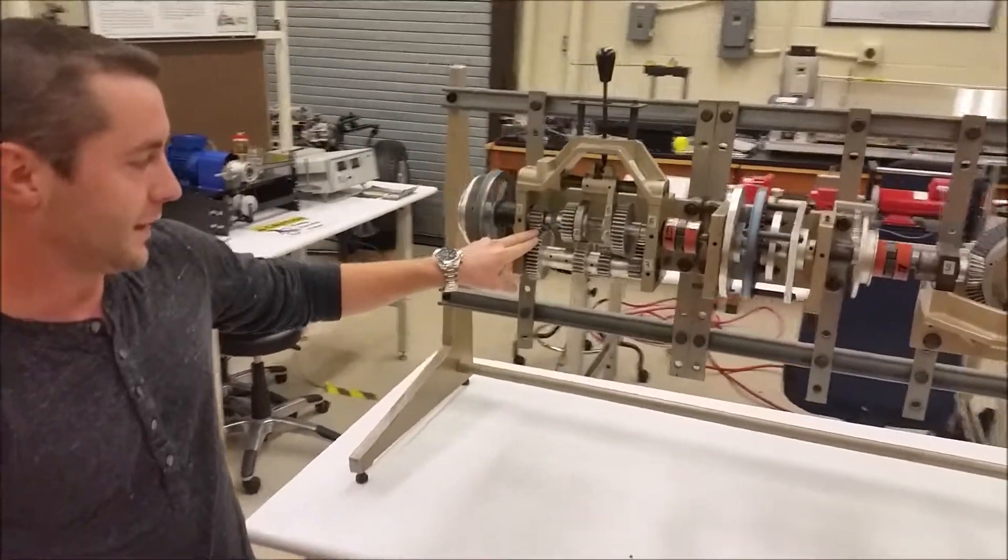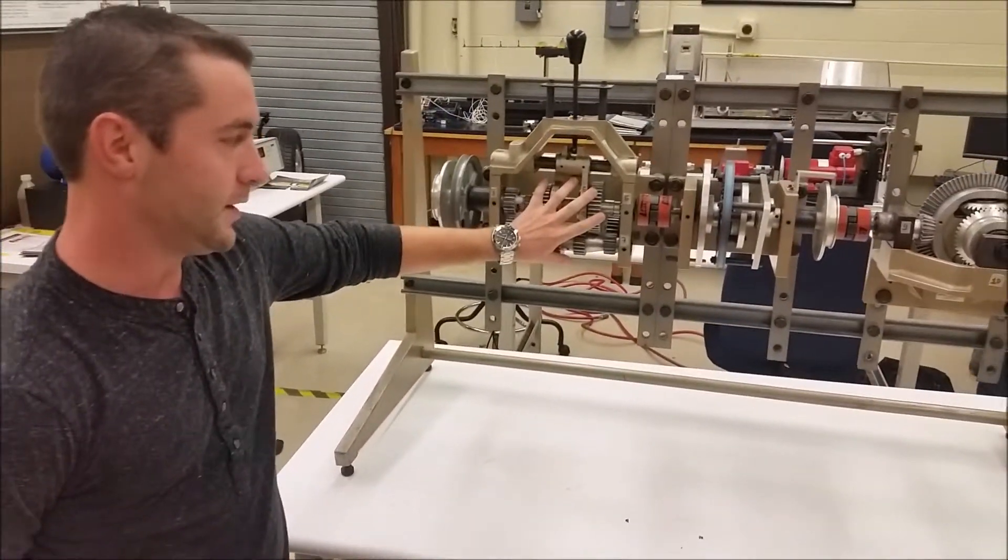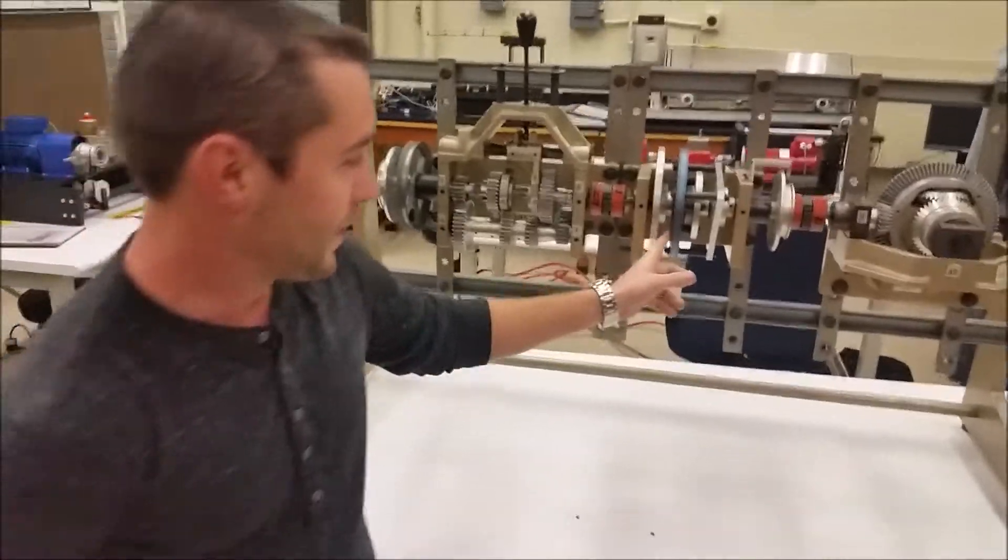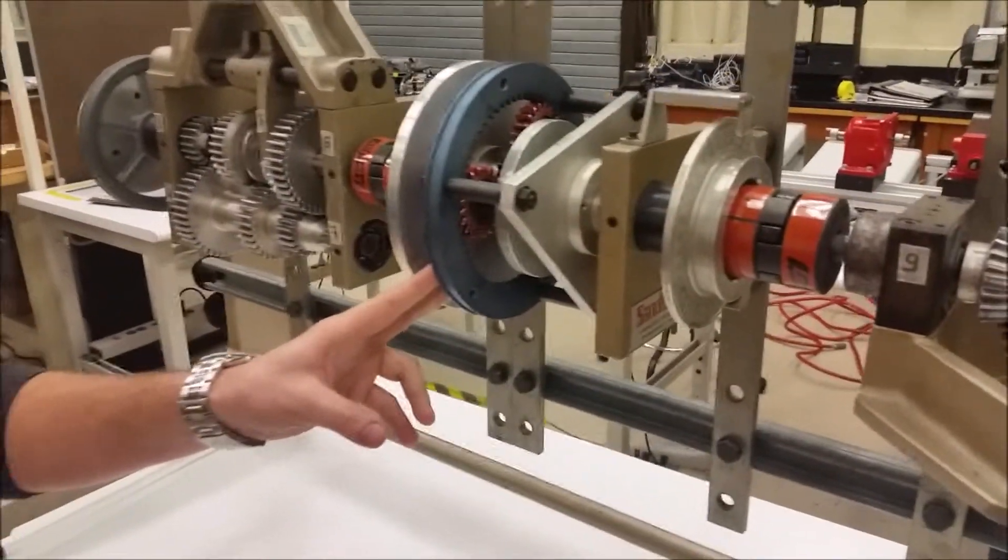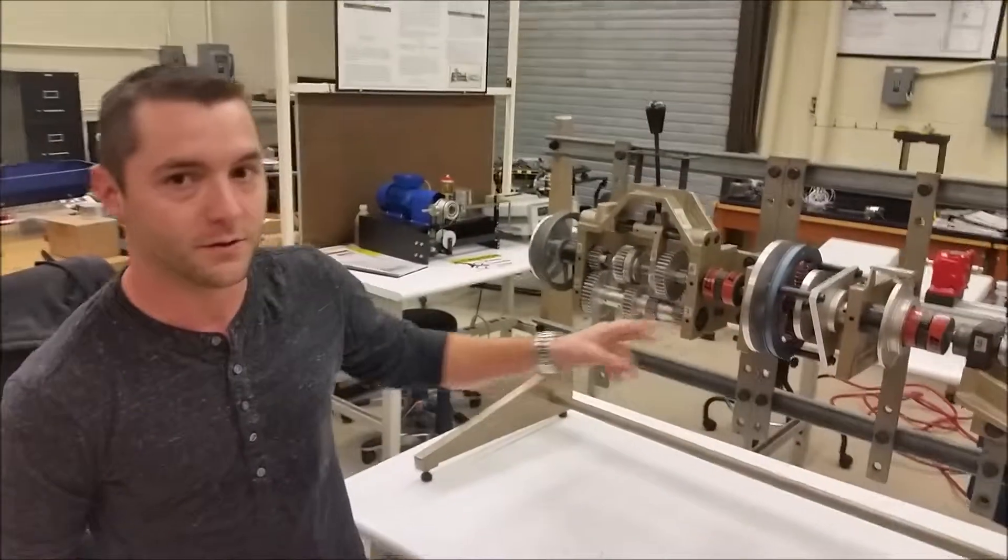The first step of this experiment is to count the number of teeth on these eight gears. Next is to count the number of teeth on the ring gear and the sun gears. This is used to calculate the gear ratios.